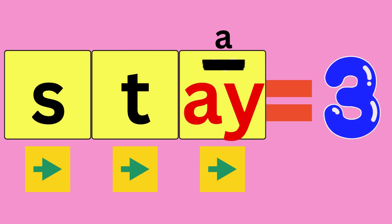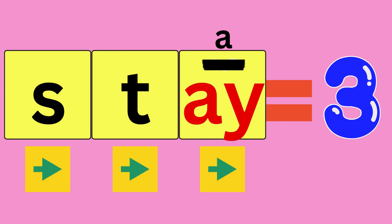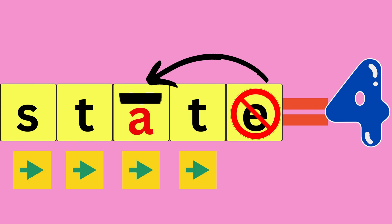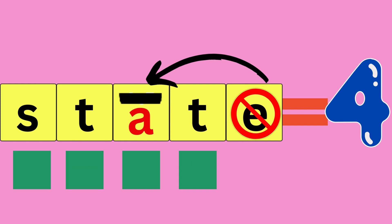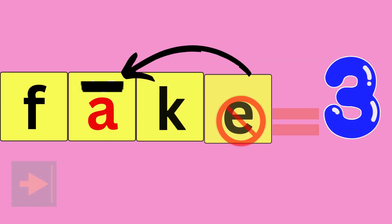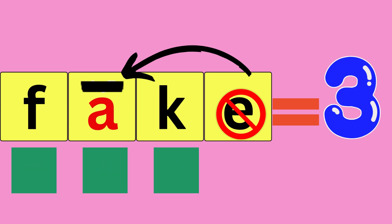Stay: S-T-A-Y, stay. How many sounds did you hear? Three. State: S-T-A-Y-T, state. How many sounds did you hear? Four. Fake: F-A-Y-K, fake. How many sounds did you hear? Three.